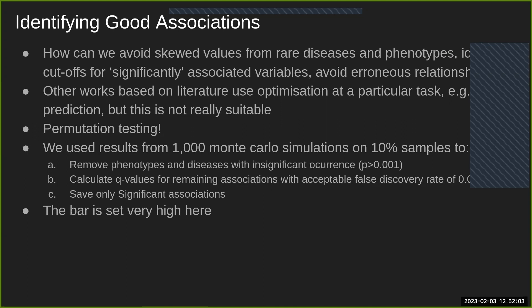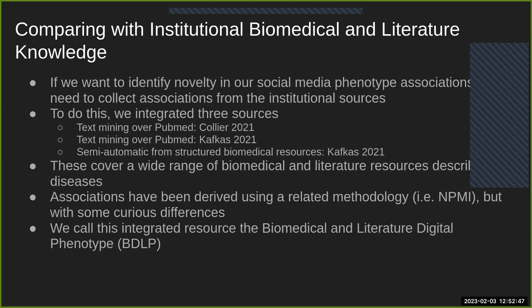This is a very high bar. Performing permutation testing on class appearances is not statistically ideal, but what we're really achieving is using significance testing as a proxy for identifying, in a data-led way, a cutoff for these phenotype-disease associations — one that is reasonable and gives us high quality, clear, minimized-error associations.